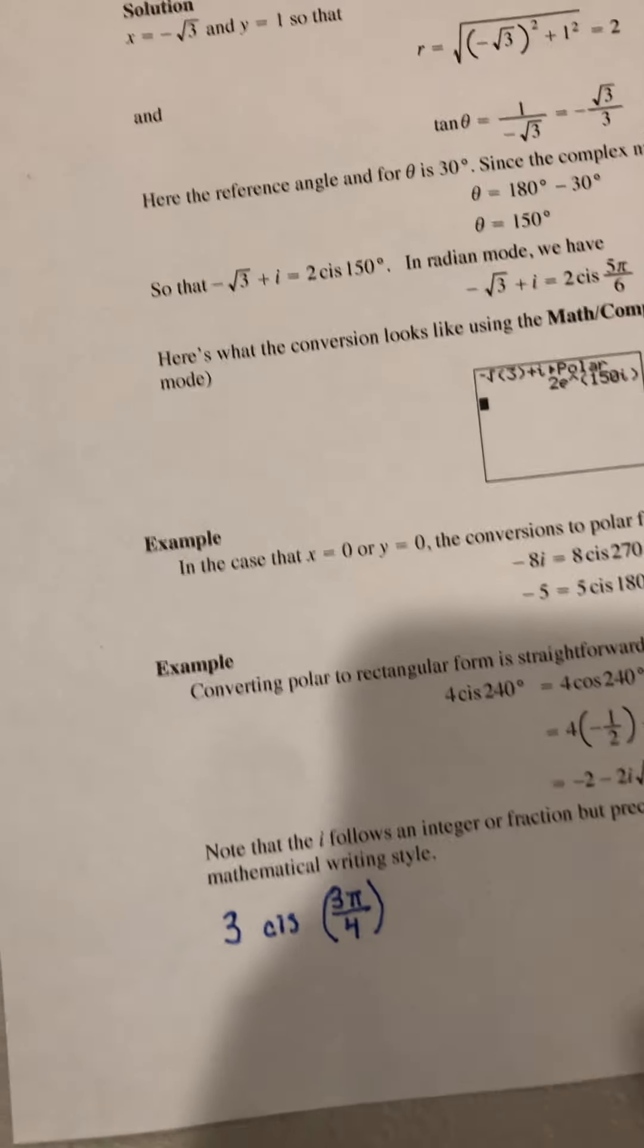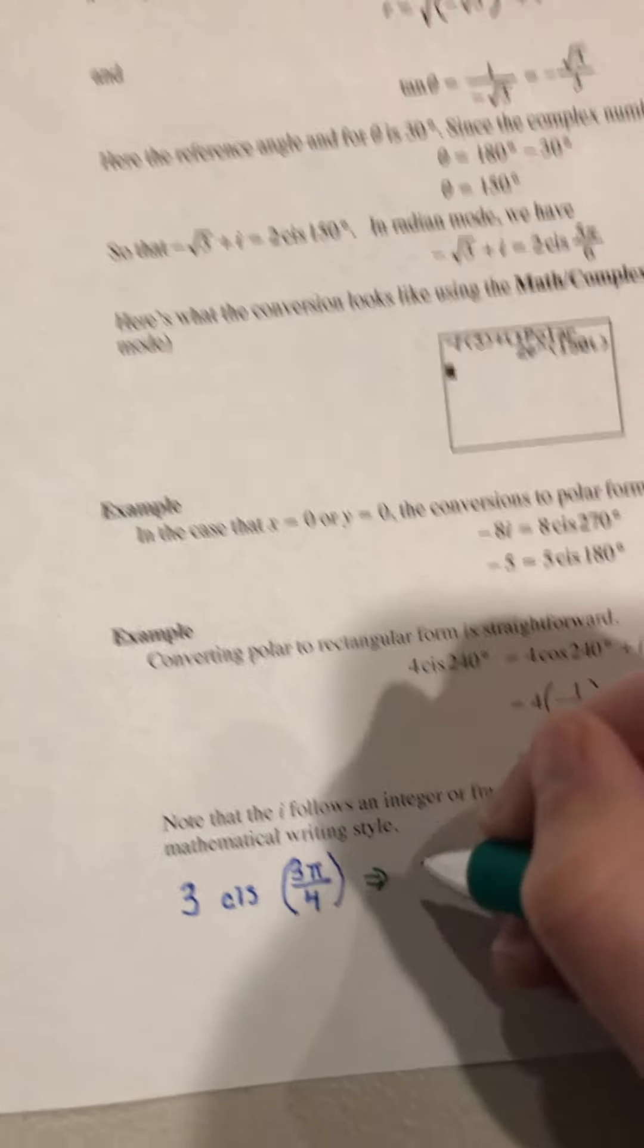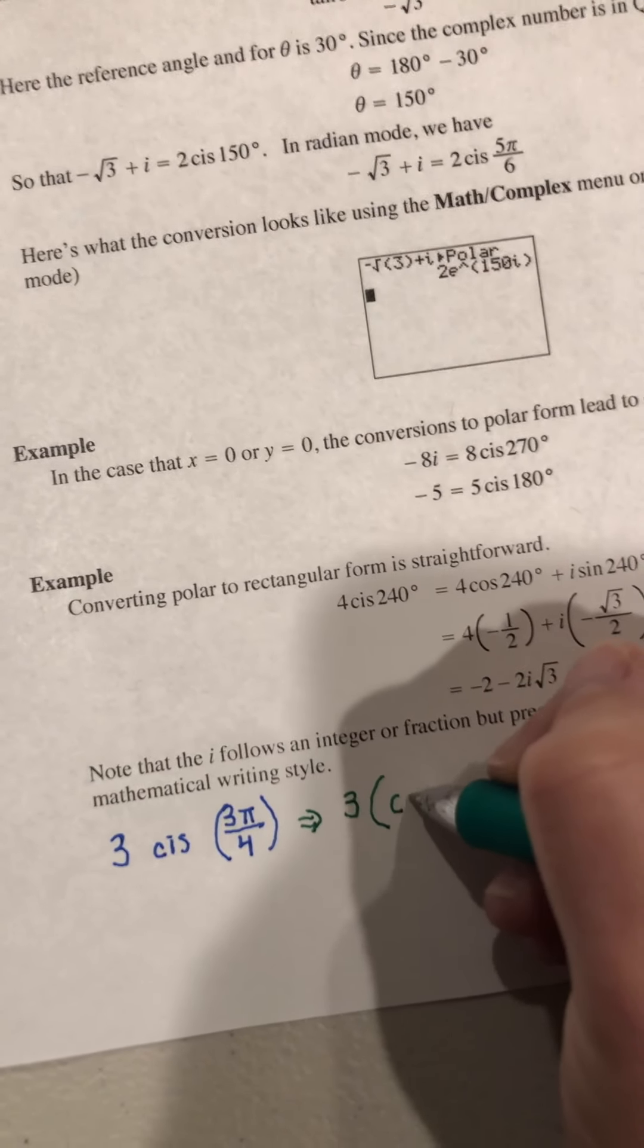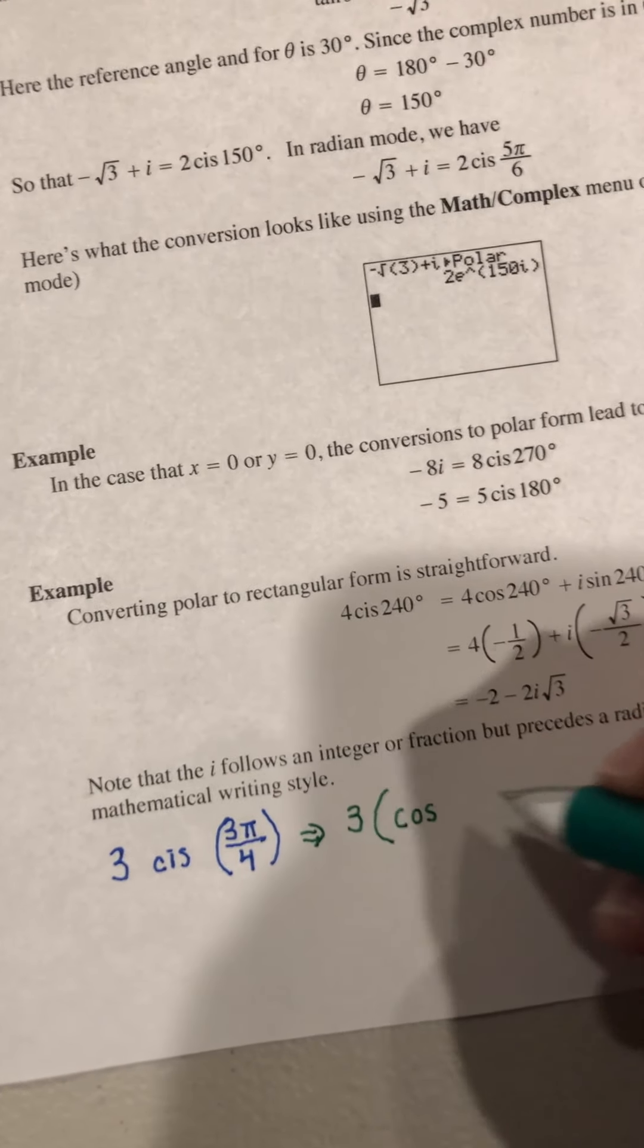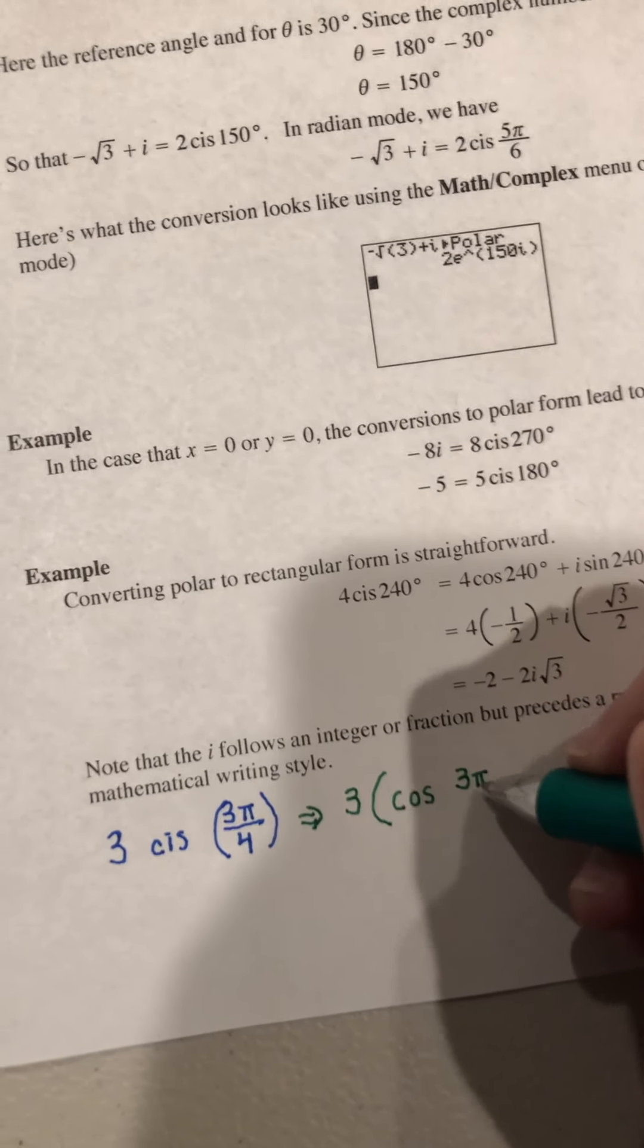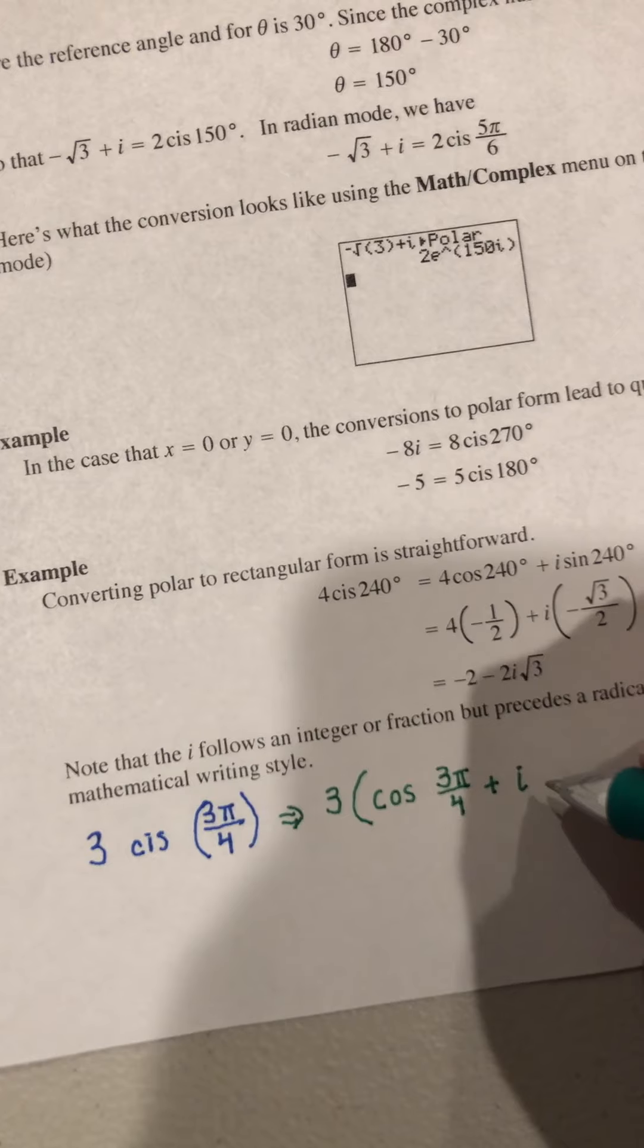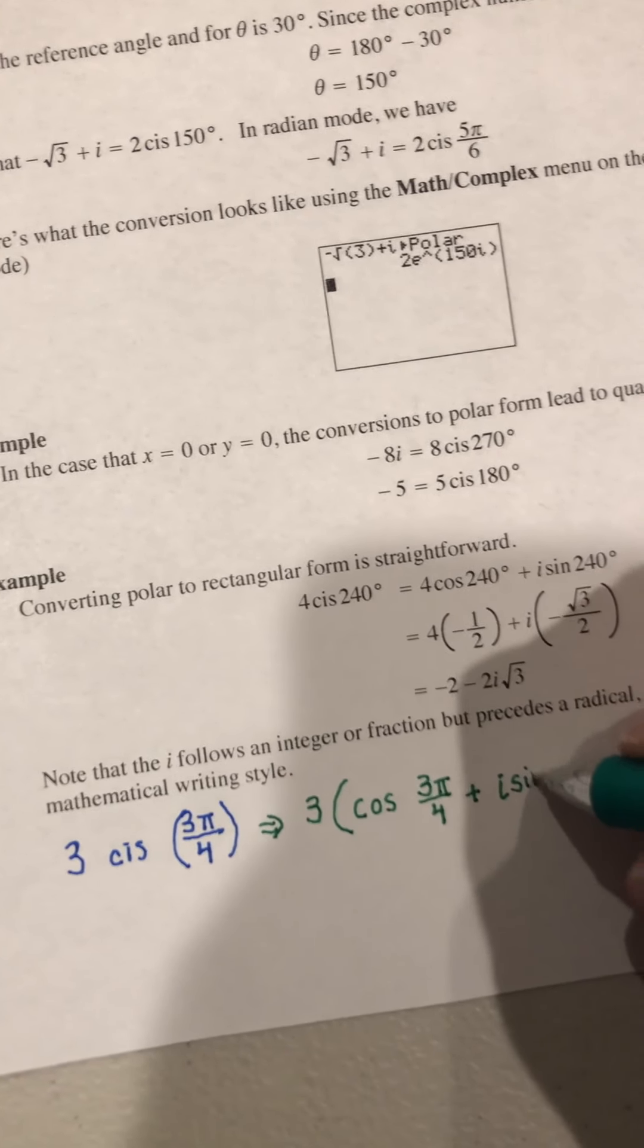Now I can expand this, and it would be 3 parentheses cosine 3 pi over 4 plus i sine 3 pi over 4.